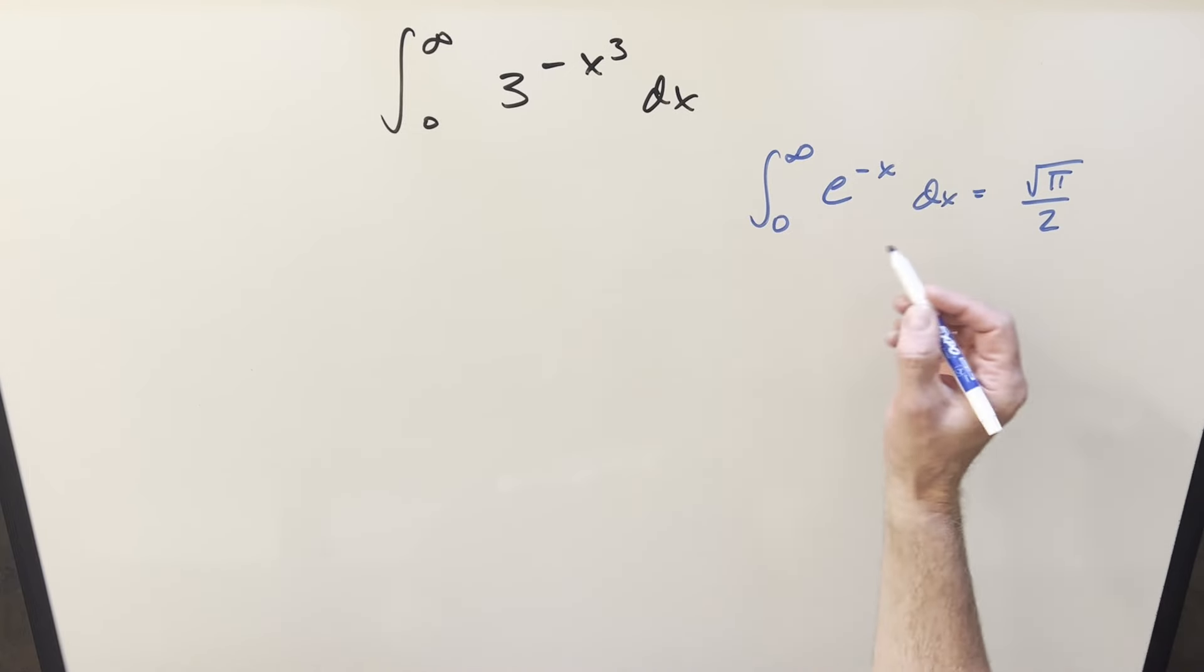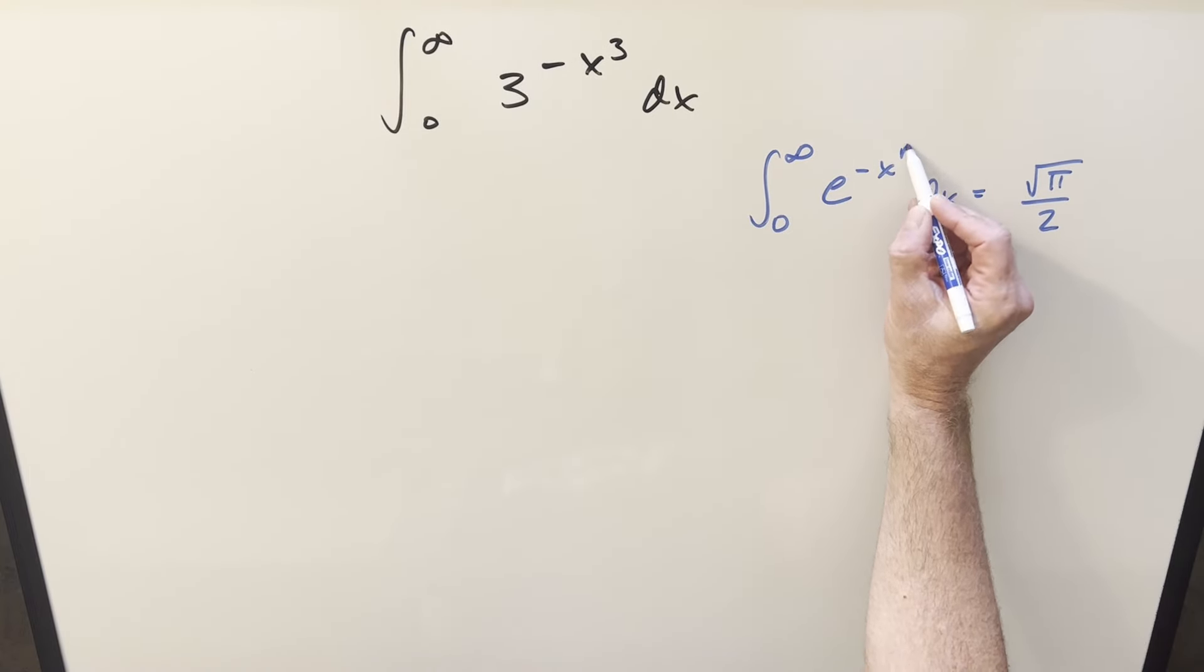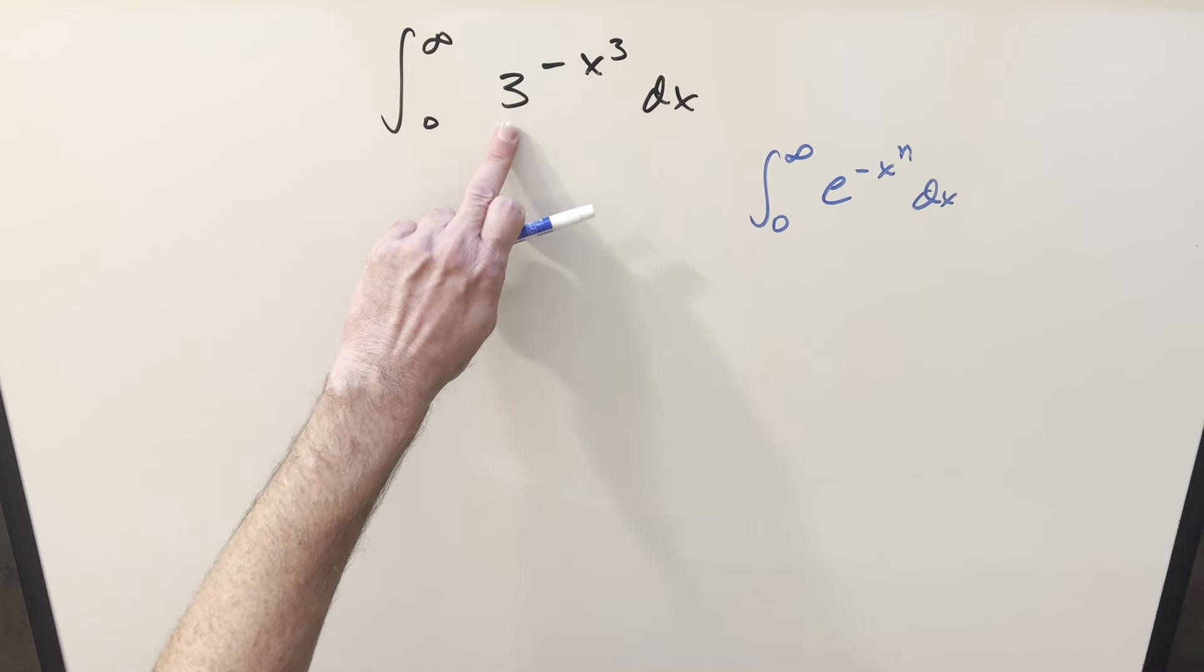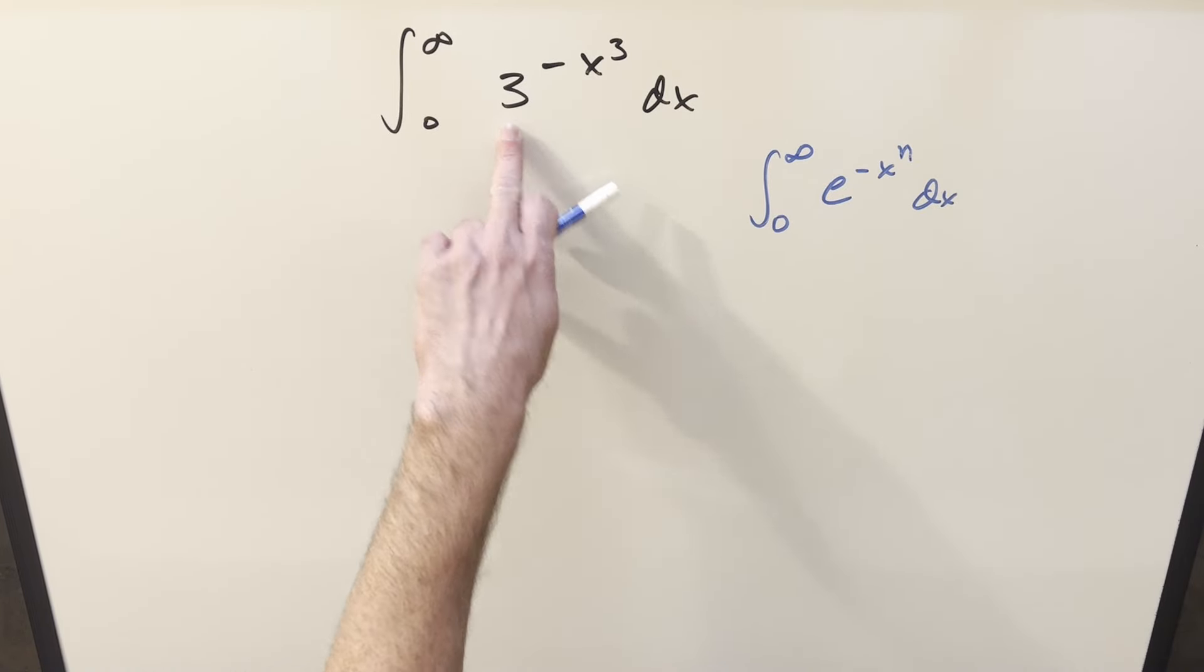But this I can actually handle, because I did a video not too far back, a generalized Gaussian integral for this. And we came up with a formula for this expression. It wasn't square root of pi over 2 anymore. It's going to be a different value, but we can have a formula for this. But now still, our base no longer is e. Now we've got a 3 here.